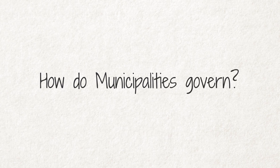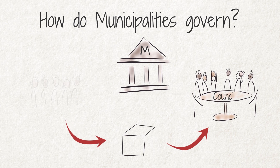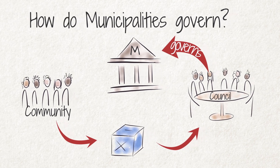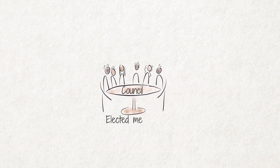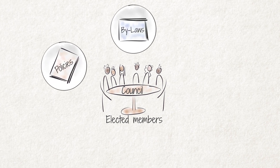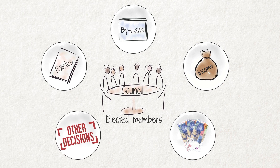How do municipalities govern? Each municipality has a council, which is elected during local government elections every five years. The municipal council governs the municipality. The council is made up of elected members who adopt policies, make bylaws, raise income and spend funds, and take decisions at council meetings on all matters that fall within its powers and functions.